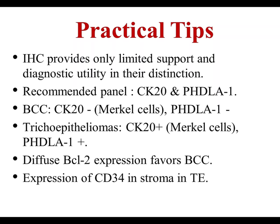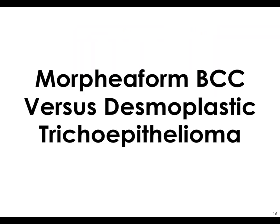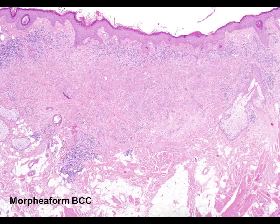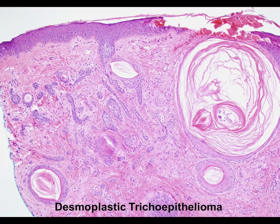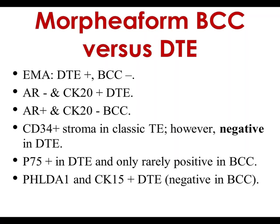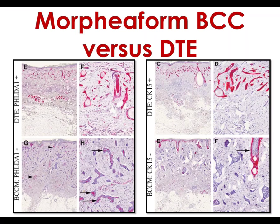The same story applies when trying to separate morpheaform or infiltrated basal cell carcinoma versus desmoplastic trichoepithelioma. Here we have an example of an infiltrated basal cell carcinoma showing infiltrative nests with desmoplastic stroma — easy to diagnose with a decent biopsy. Desmoplastic trichoepithelioma is also easy if you have a punch showing the base of the tumor. However, with a small shave biopsy it can be very challenging. In my opinion, CK20 is a fairly useful marker for this distinction, and PHLDA1 is also useful — desmoplastic trichoepitheliomas tend to be strongly positive and basals tend to be negative.